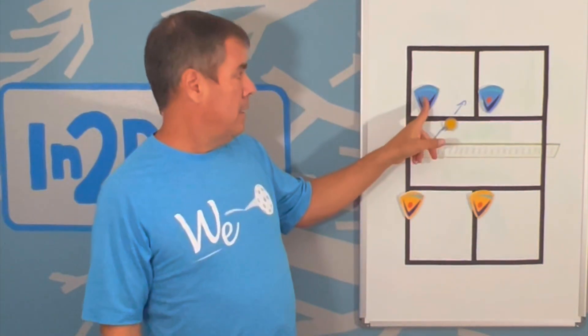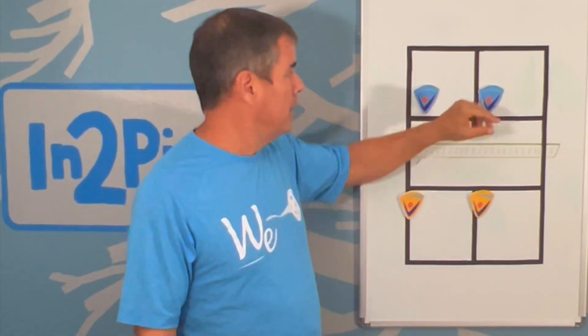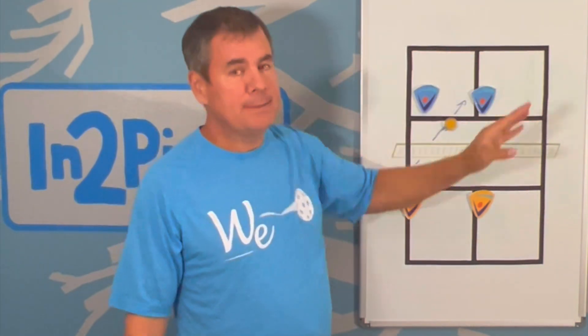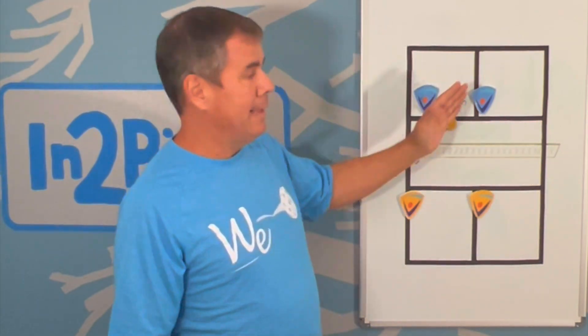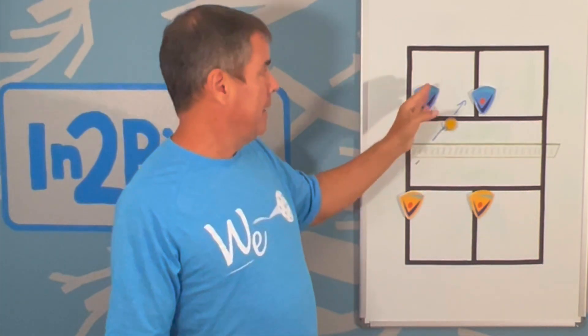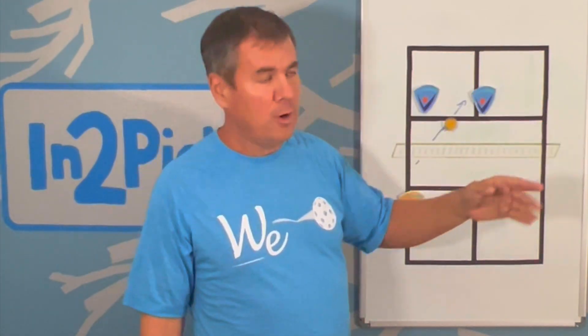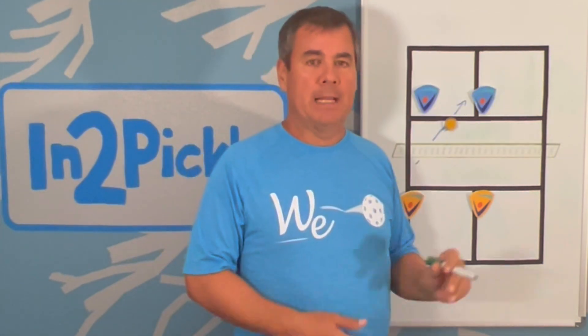Should the player on the right side of the blue court hit the ball because the ball is on that player's side of the court? Or should the player on the left side of the blue court hit that ball? The answer is that the player on the left side of the court should hit that ball because the ball is traveling in the direction of that player. Who should hit the ball is not determined simply by whether it's on the right side or left side of the court — because the ball is traveling in this direction, the player on that end of that axis of the X should hit the ball.